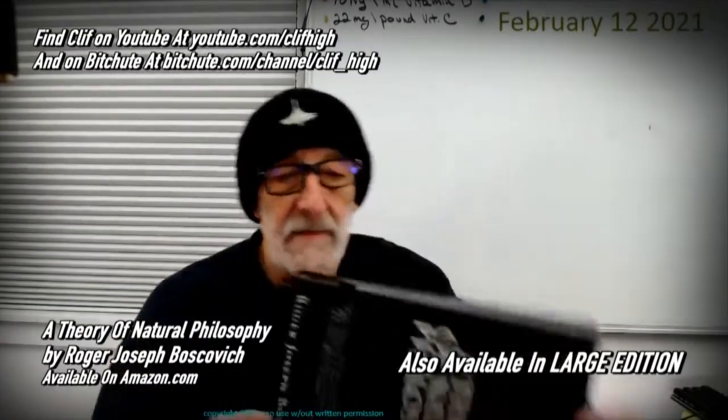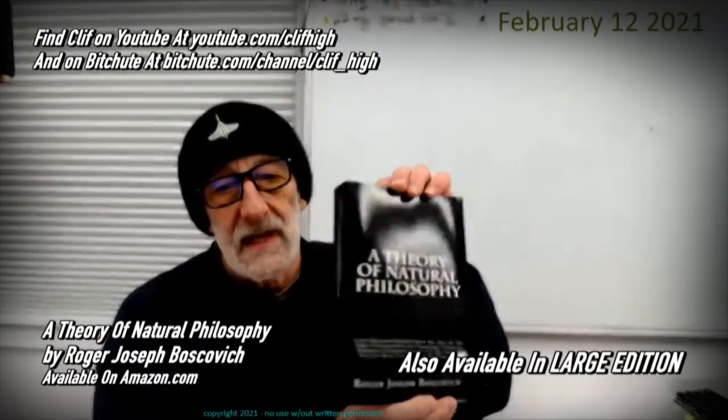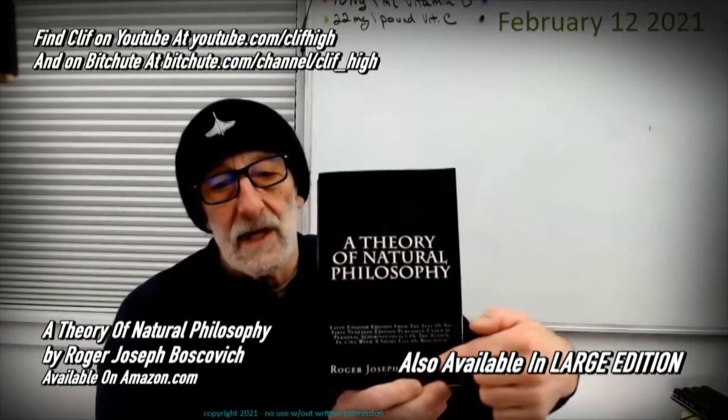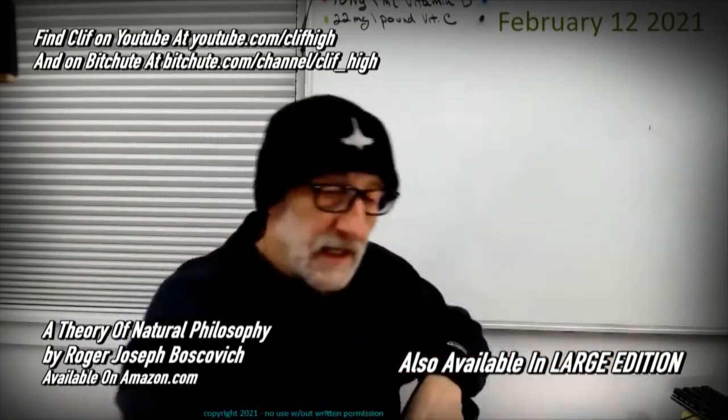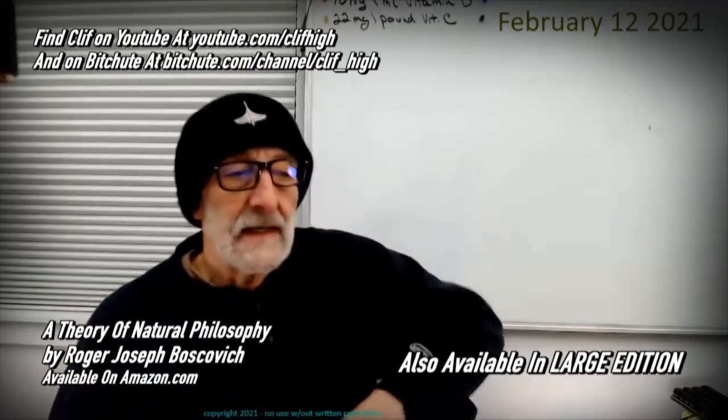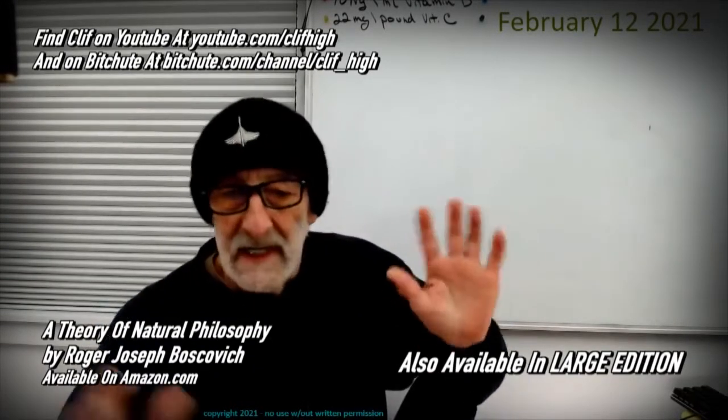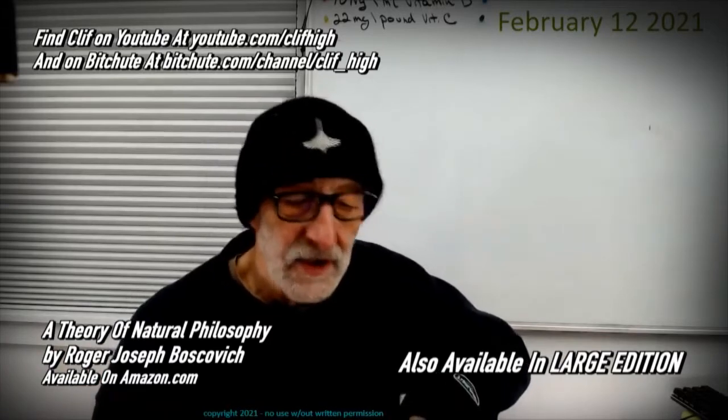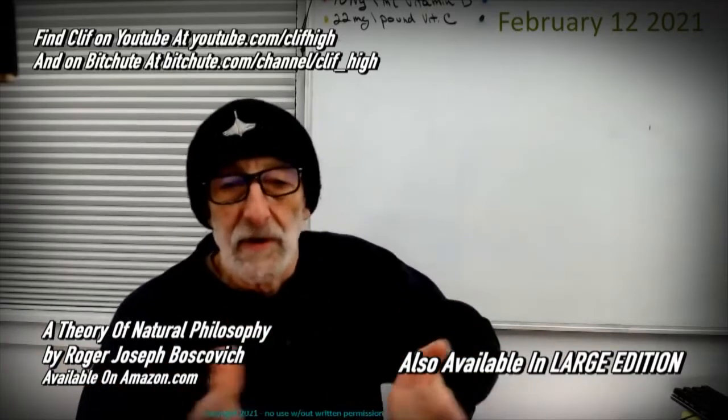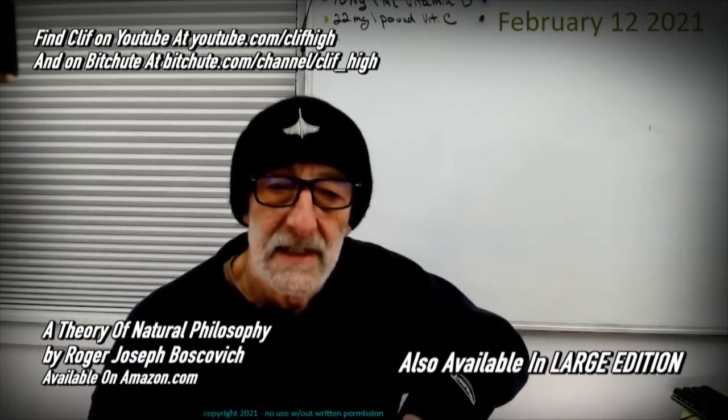Again, let me hold up the theory of natural philosophy by Roger Josephus Boscovich. Really, Ruggero, was it Giancarlo or Giuseppe? I can't remember. Boscovich, because he had an Italian name. He's on the border between Serbia and Italy at the time in the 1700s.